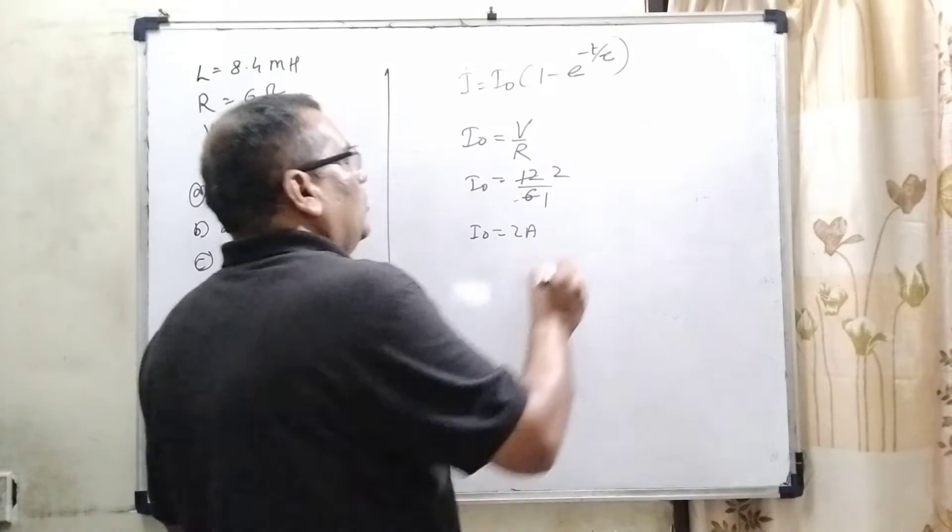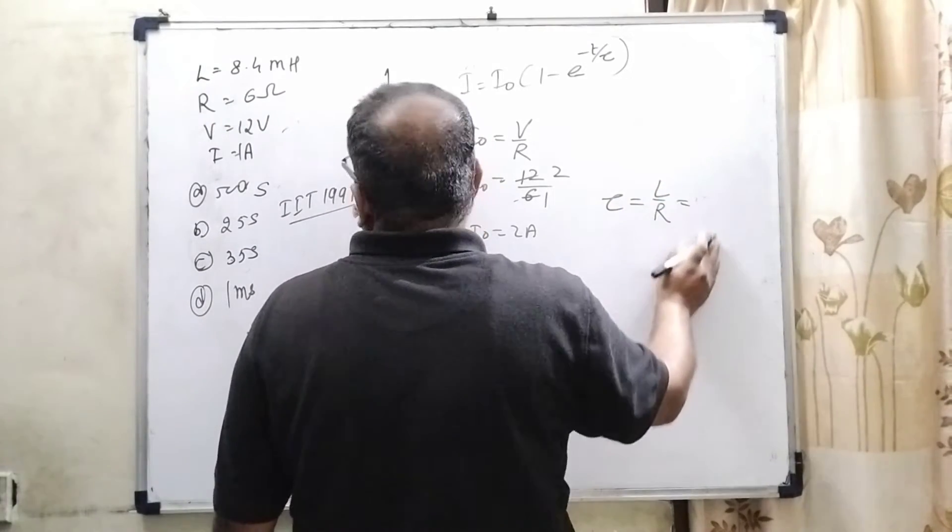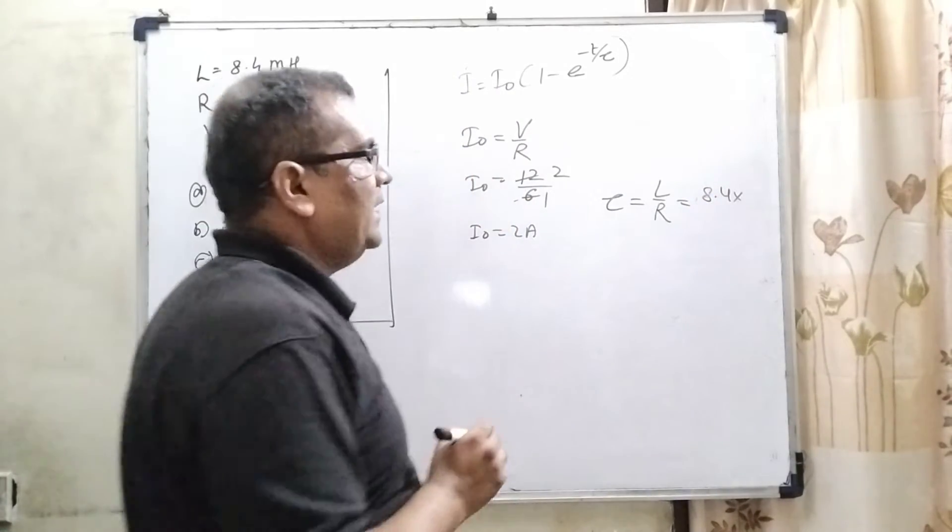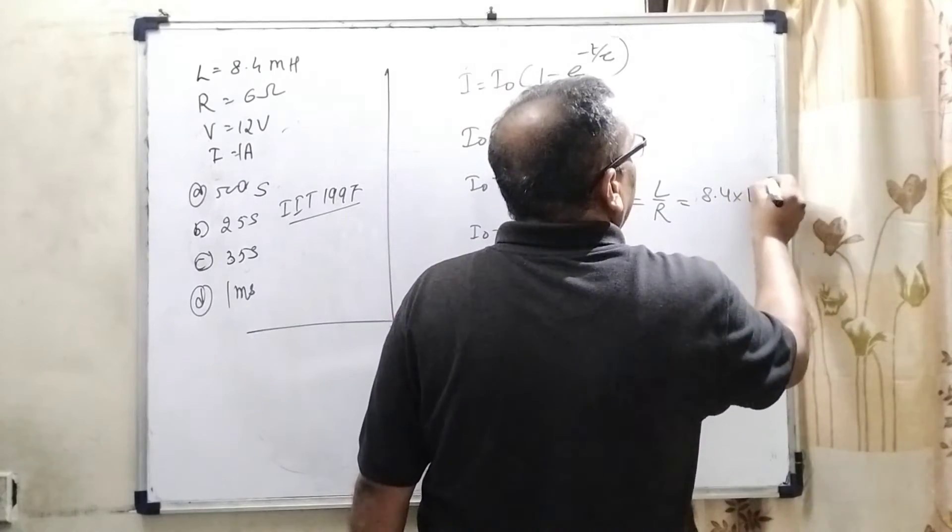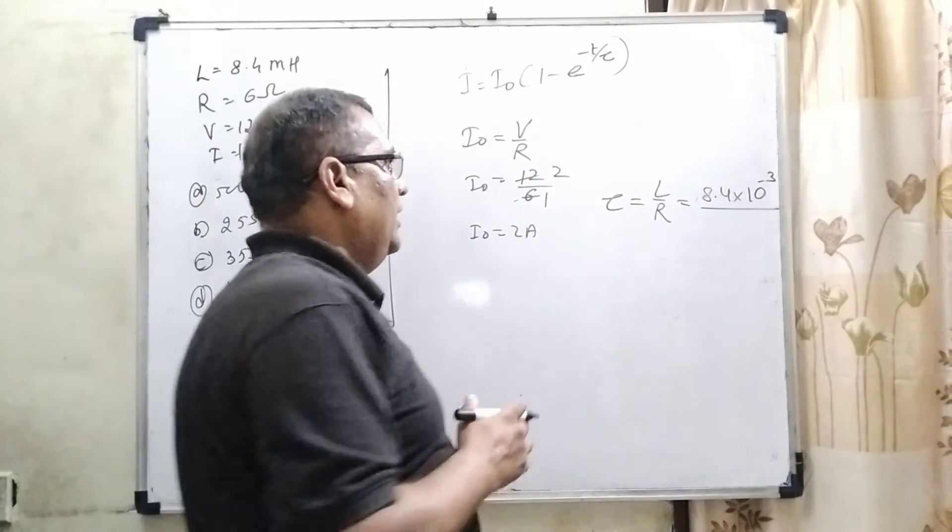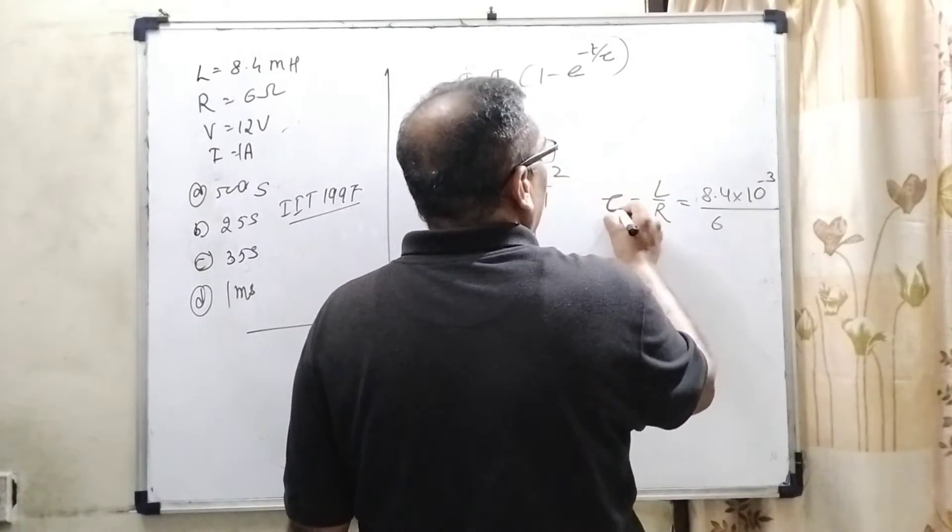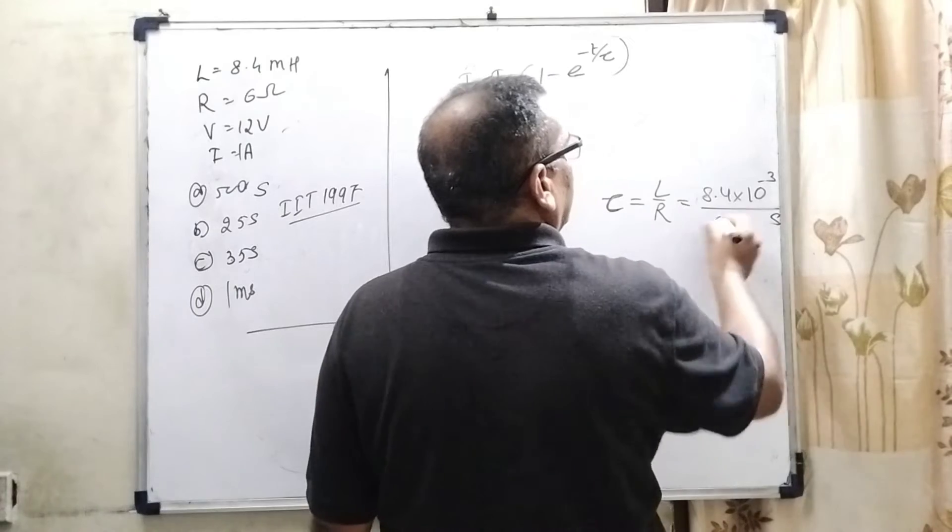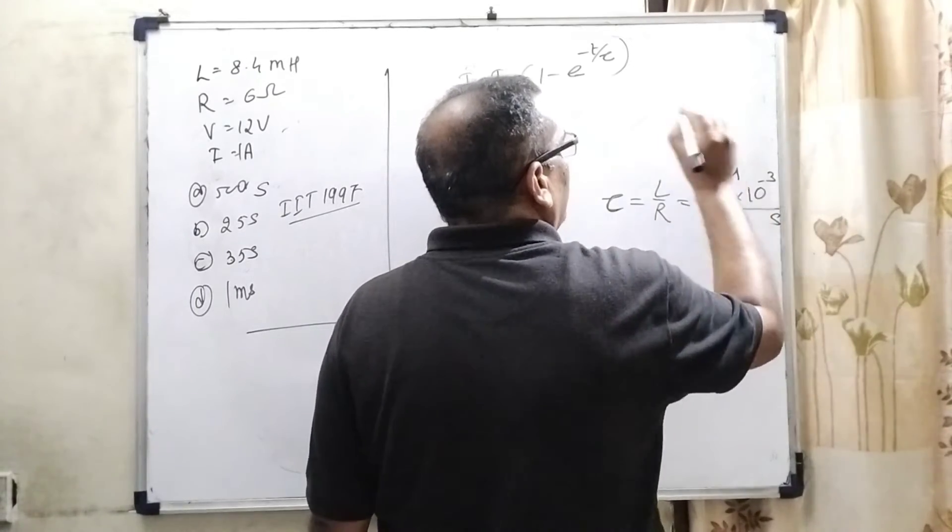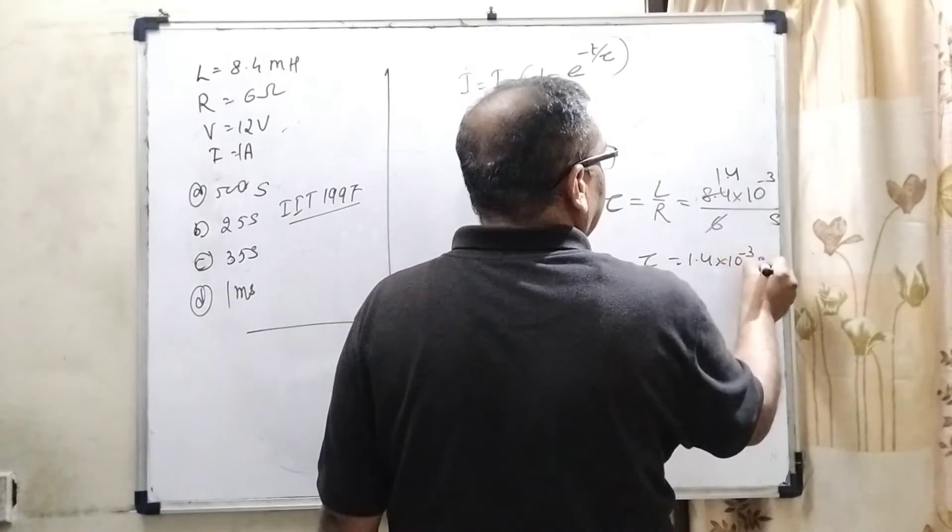And tau, time constant, its formula is L by R. So, what is L? We are given 8.4 mH, that means 10 raised to power minus 3. Whenever we use mH means 10 raised to power minus 3. And resistance is given 6 ohm. And its unit is second. So, 8.4 divided by 6 equals 1.4 into 10 raised to power minus 3 second.